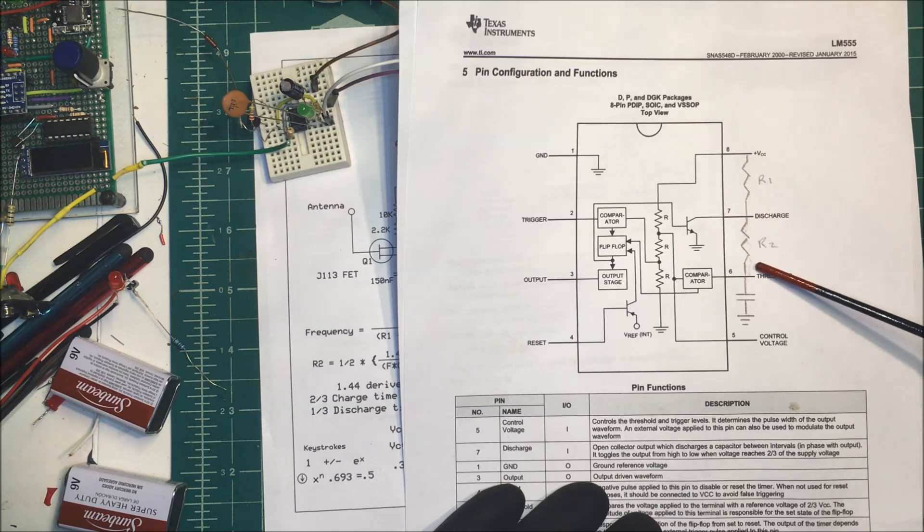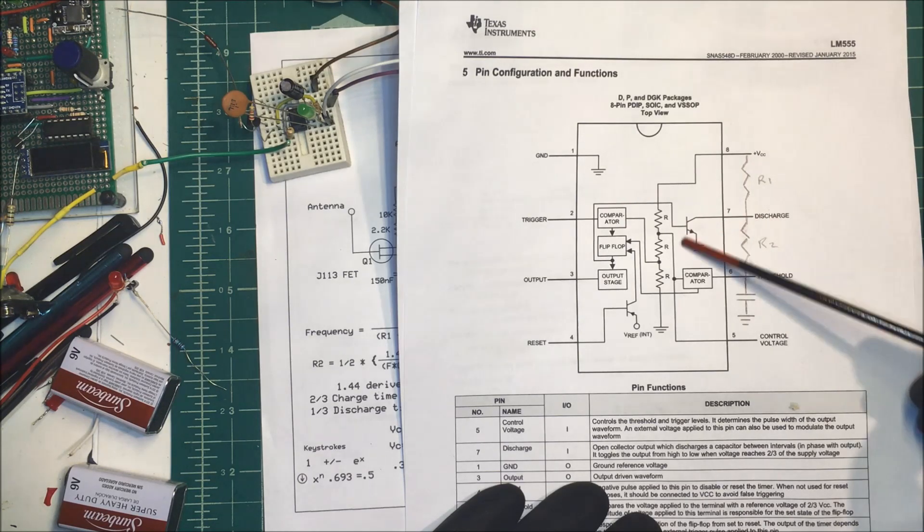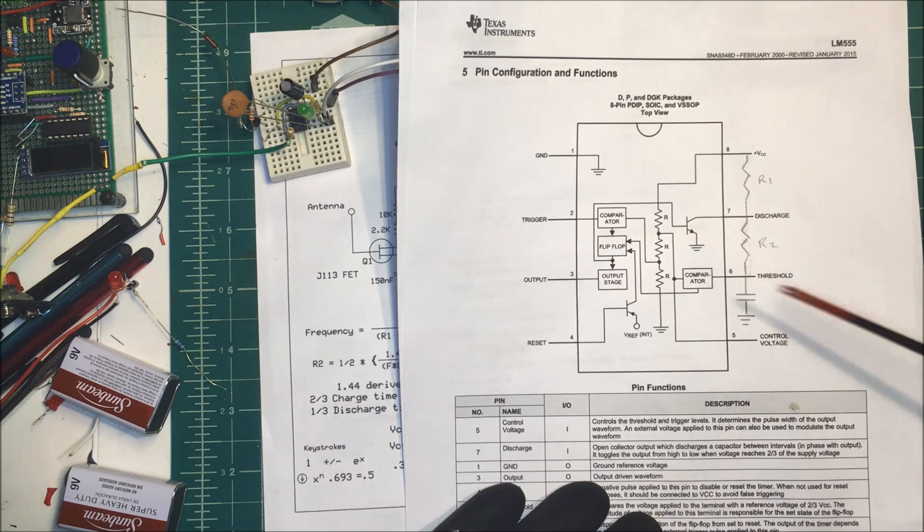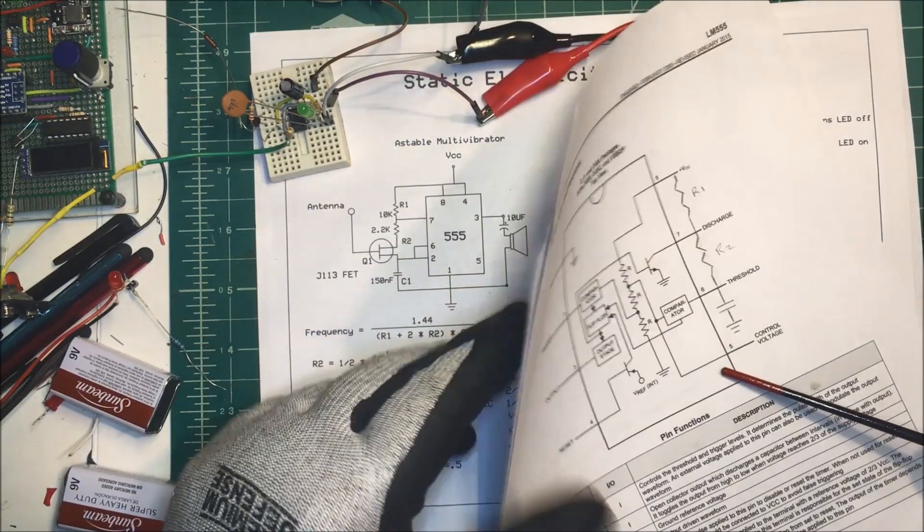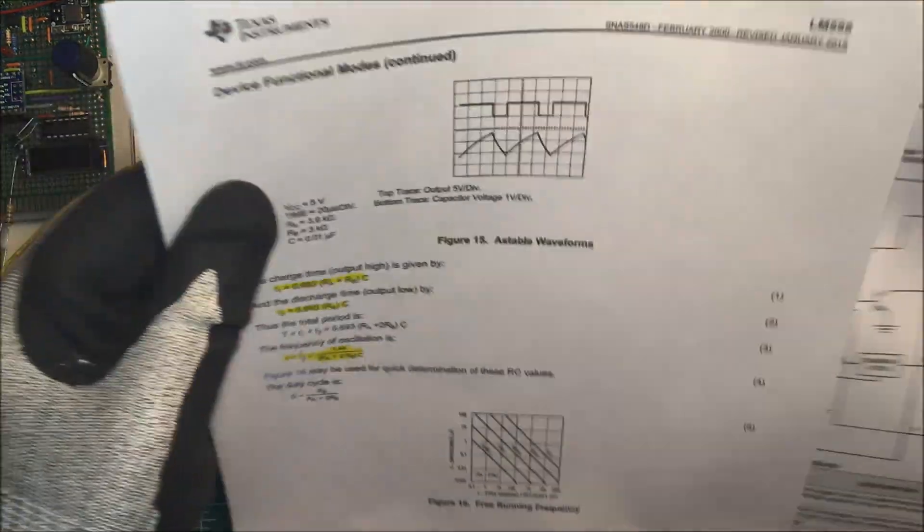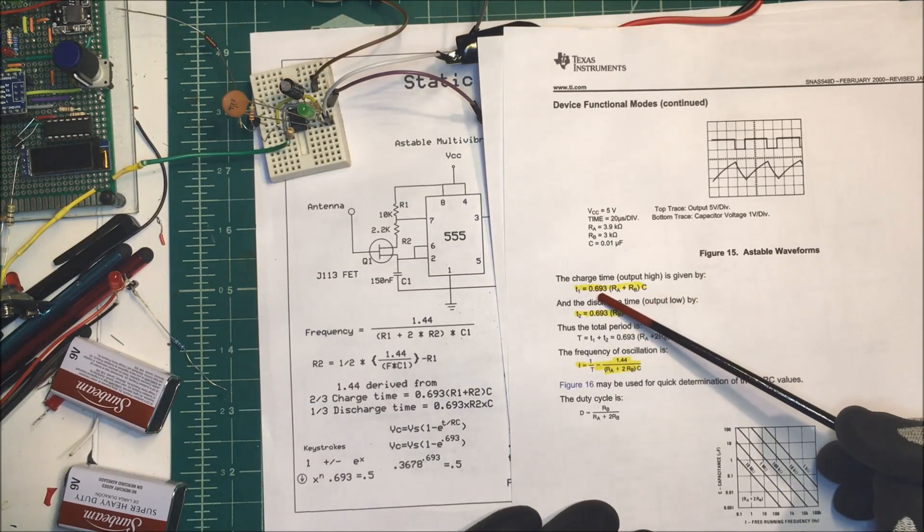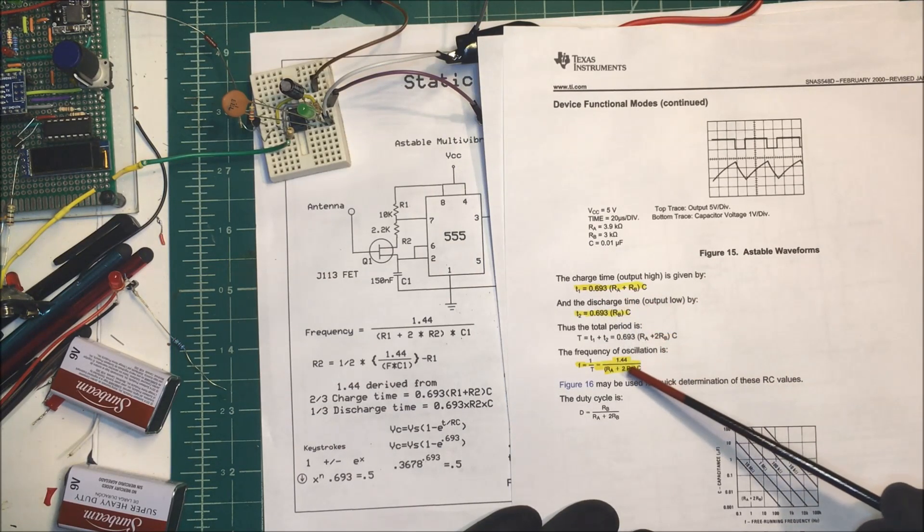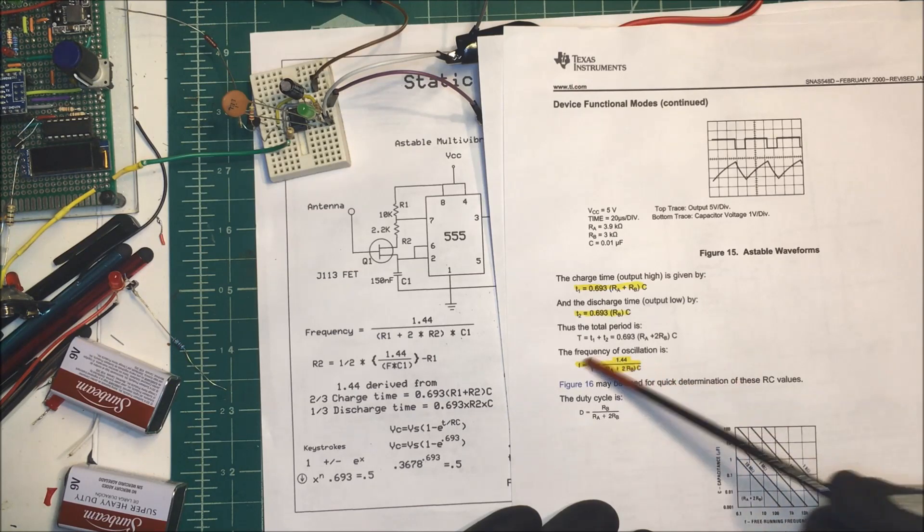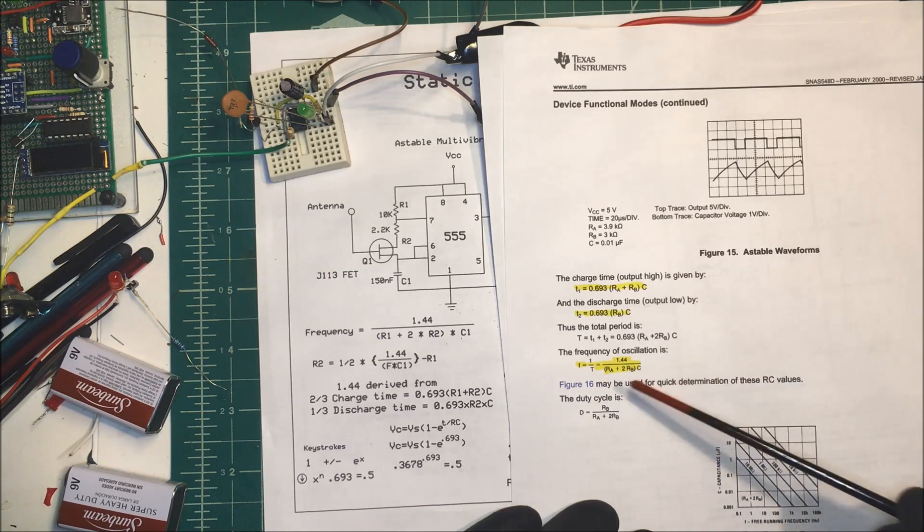It charges through R1 and R2 and then it just charges. This is a capacitor. It just charges through just R2 here back through this transistor right here. Now in the spec sheet they give you this number here, this point 0.693, okay, and this 0.144 here to calculate the frequency...